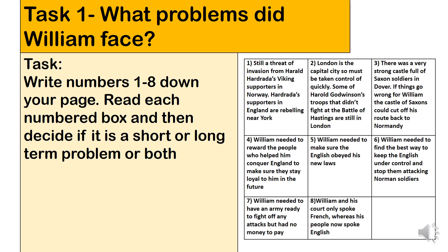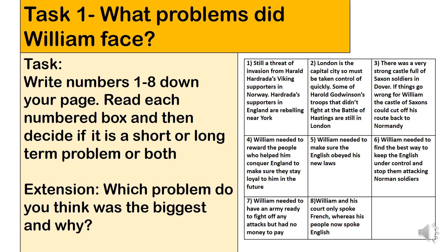I've now got an extension question: out of those eight problems, which one do you think is the biggest problem that William would face and why? Read through the eight boxes again, pick the biggest problem, and write your answer as a short paragraph using evidence from the boxes to help you. Pause the video here and write your answer.